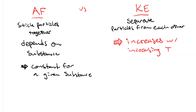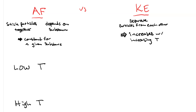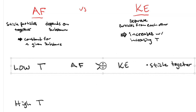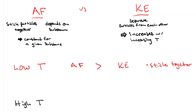Let's make a table. Our table has two rows: low temperature and high temperature. When the temperature is low, the kinetic energy is low — that means the attractive force is greater than the kinetic energy and the particles stick together. So at low temperature: AF > KE, the particles stick together. At high temperature, on the other hand, the attractive force is the same as it was, but now the kinetic energy is high. If it's high enough, the inequality goes the other way — the kinetic energy has surpassed the attractive force and the particles are going to fly apart.